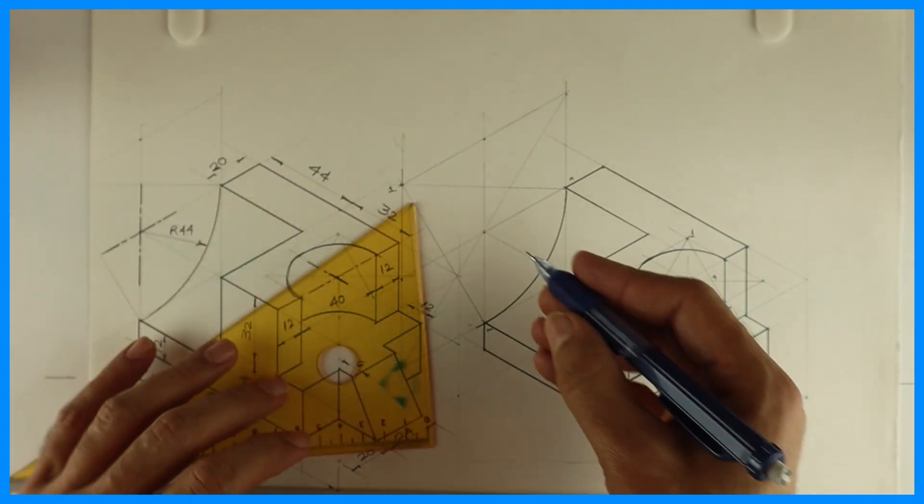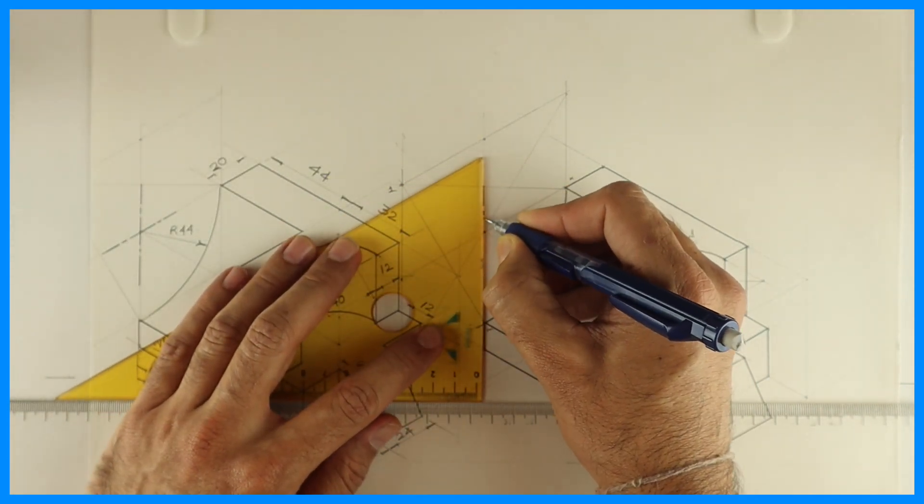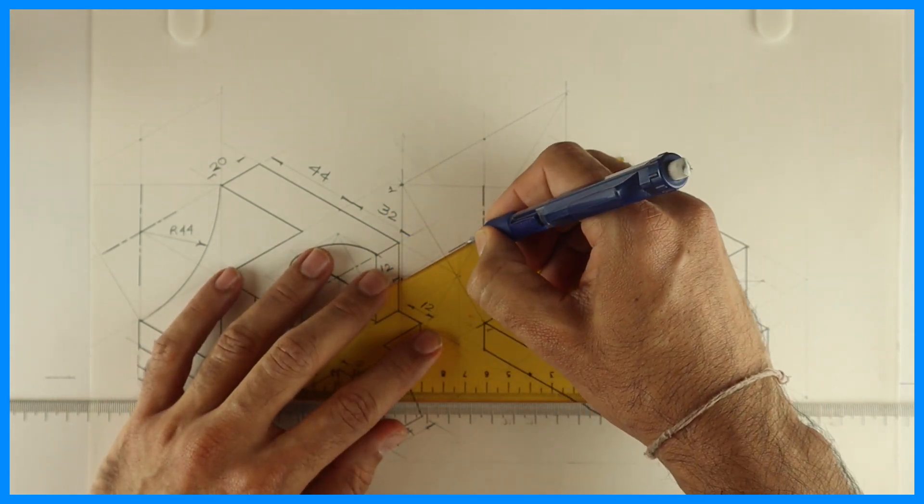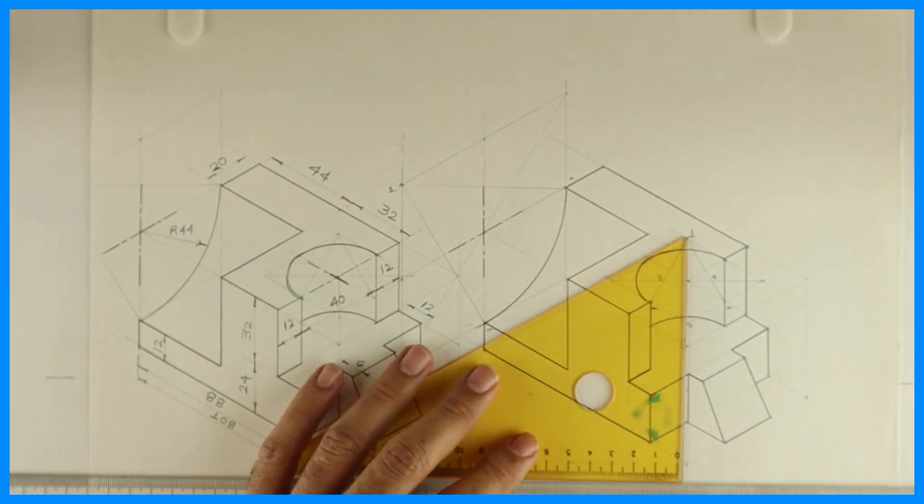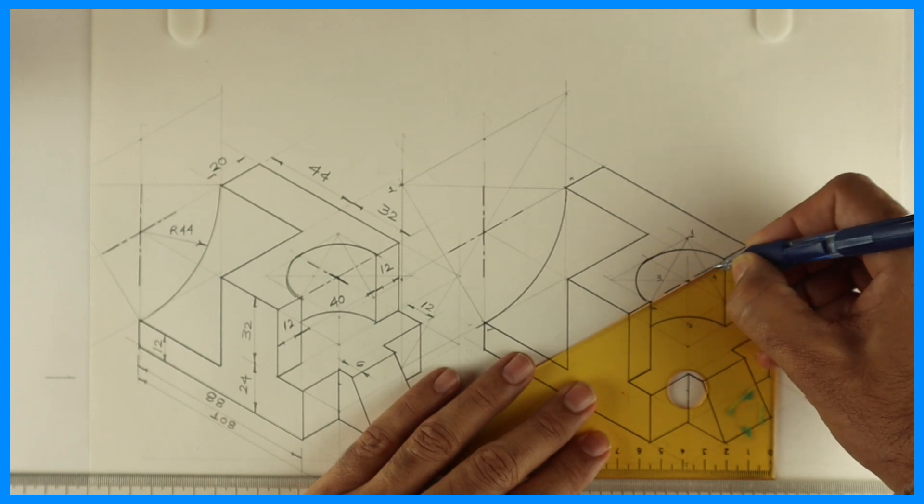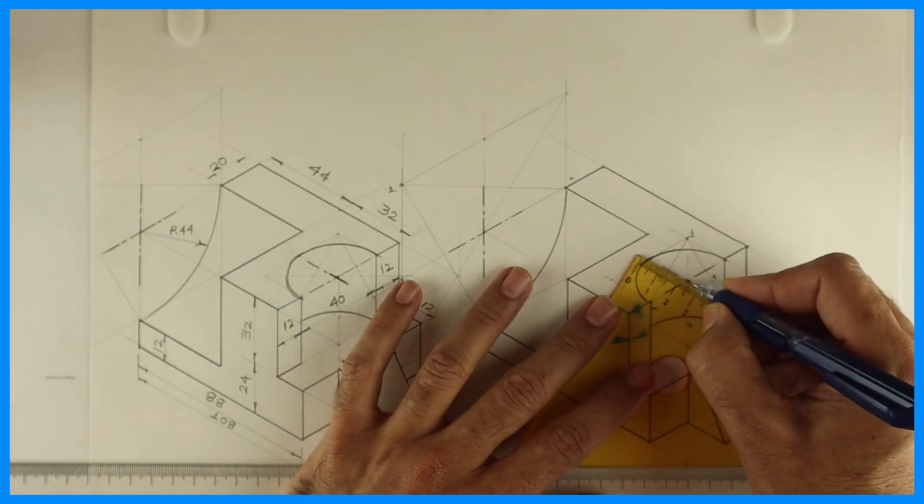After this we can draw axis line and dimensioning, and we can write origin and 30-30 degree. It is very important from the ICAC point of view. Generally we get this kind of sum, copy isometric.